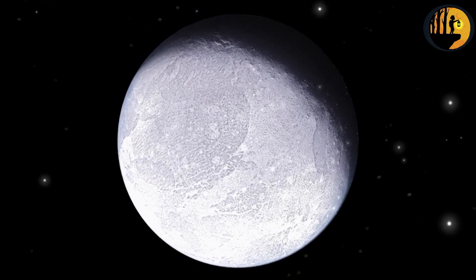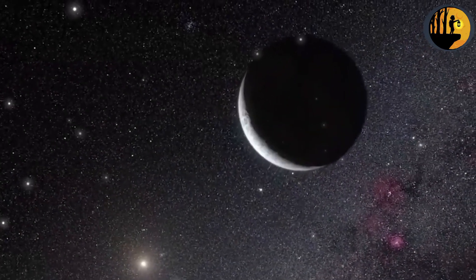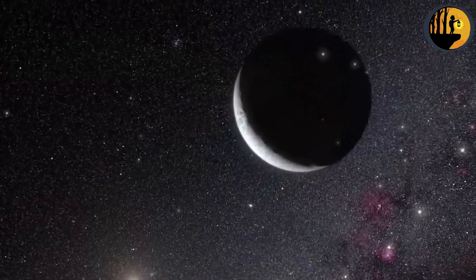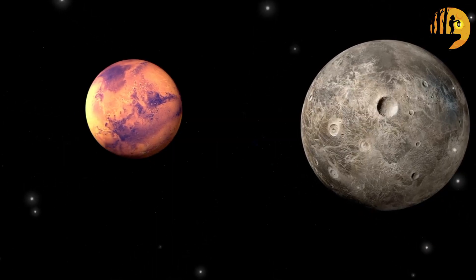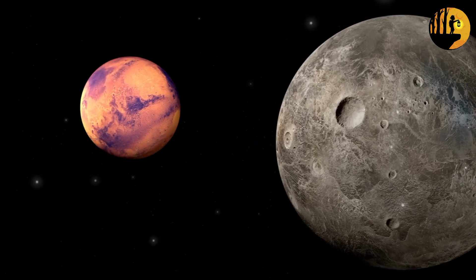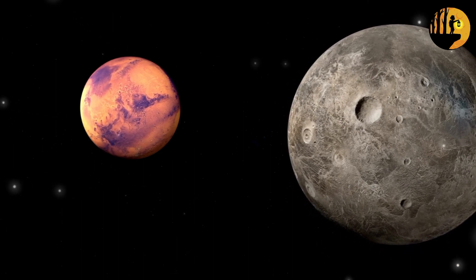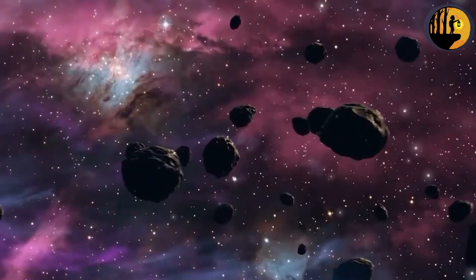To distinguish these smaller celestial bodies from the traditional planets, the term dwarf planet was coined. It reflects their similarities to planets in terms of orbit and shape, while acknowledging their unique characteristic of not having cleared their orbits completely. The use of the term dwarf is not meant to diminish their significance or importance. Dwarf planets are fascinating objects in their own right and contribute to our understanding of the solar system's formation and dynamics.